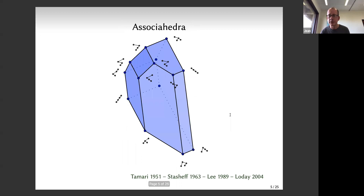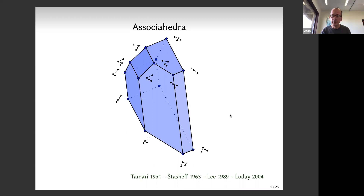The rotation graph is also the skeleton of a polyhedron called the associahedron. For n equals 4, the associahedron is three-dimensional. It's a geometric object appearing in many fields of mathematics - combinatorics, topology, even physics. It first appears in work by Tamari in the 1950s, was popularized by Stasheff (also called Stasheff polytopes), and we now know of many distinct geometric realizations.